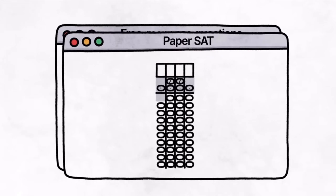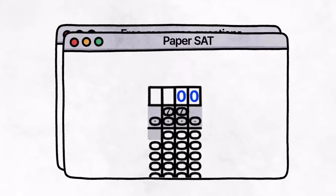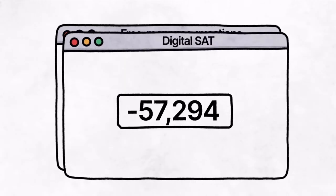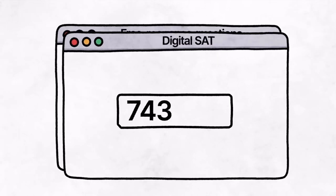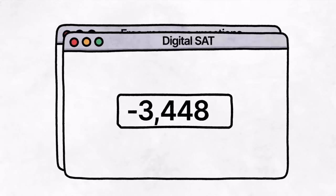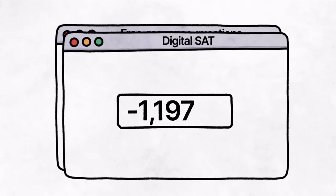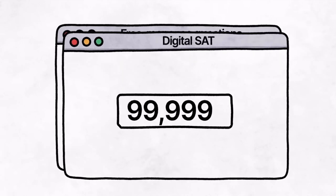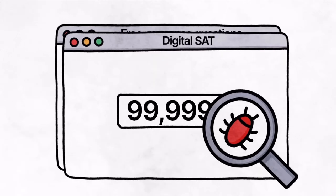This meant that by design, possible answers for FRQs in math were limited to positive values between 0 to 9999, down to the thousandth place in decimals. The digital SAT, however, now accepts negative values and digits up to five digits, making the range of possible answers for FRQs in math between negative 99,999 and positive 99,999.